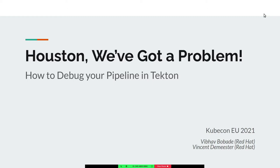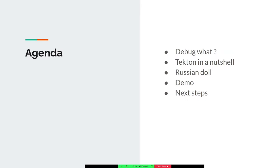Today we are going to talk about how to debug your pipeline in Tekton. Let's go through the agenda. First, we'll define what we mean by debug — debug what? Then we'll go rather quickly on what is Tekton in a nutshell. Then we'll do a little bit of magic in Russian dolls, explaining how all this works. Then Vibhav will do a demo and we'll finish with the next steps after this work.